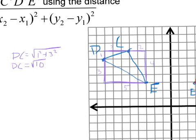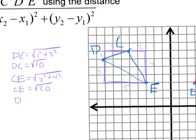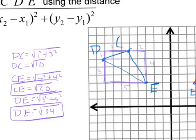For DE, I box it off and get a 3 by 5 rectangle, so DE equals the square root of 3² + 5², which is the square root of 9 + 25 — the square root of 34. I'm going to box these numbers because now I want to see if I get the same numbers for the other triangle.